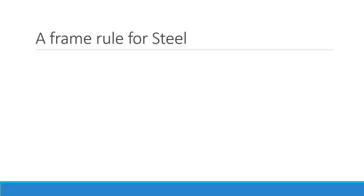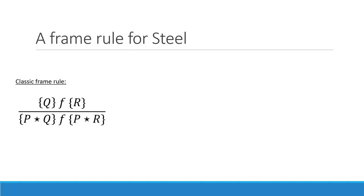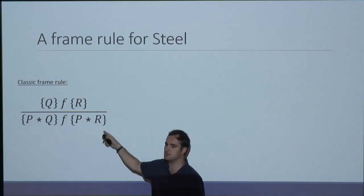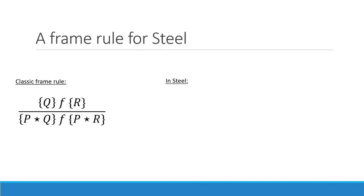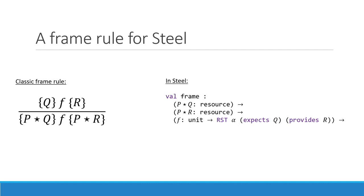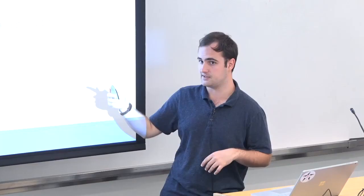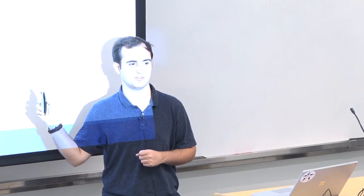The way you implement and prove memory safety in separation logic is by using the frame rule. The frame rule says that if you have a function from Q to R, you can apply it to P star Q and get P star R — P is untouched by the function. The neat thing is you can express this rule as a Steel function that takes the initial and final resource context, the function on Q and R, and returns your computation with the right resource context. This is the workhorse of Steel — all your function calls should be encapsulated inside the frame rule, so for each stateful operation on the heap you know precisely which part is modified and which part is untouched.